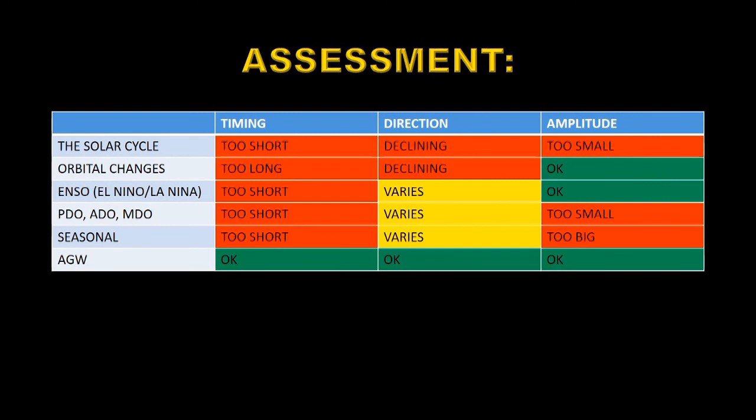The only one that scores three green squares in this assessment is anthropogenic global warming. The timing is exactly right — carbon dioxide is going up in lockstep with temperatures. The direction is right: increasing carbon dioxide and decreasing aerosols produce the effect we're seeing. And the amplitude is perfect — when you do the calculations, it produces the level of warming that we should be seeing.